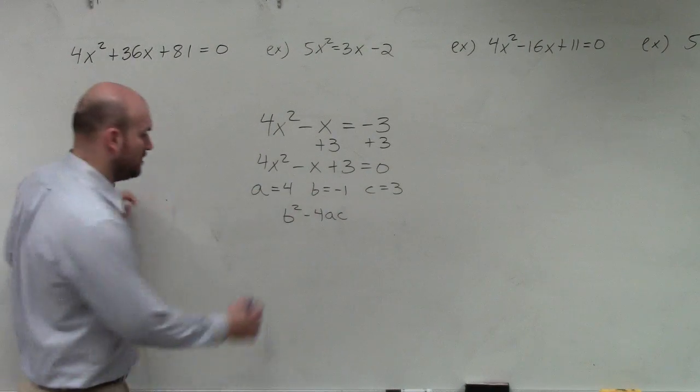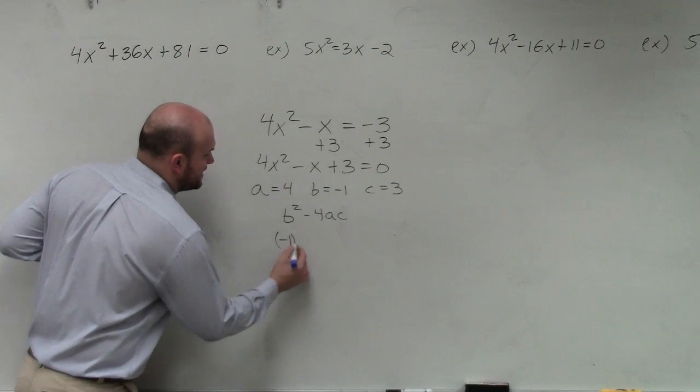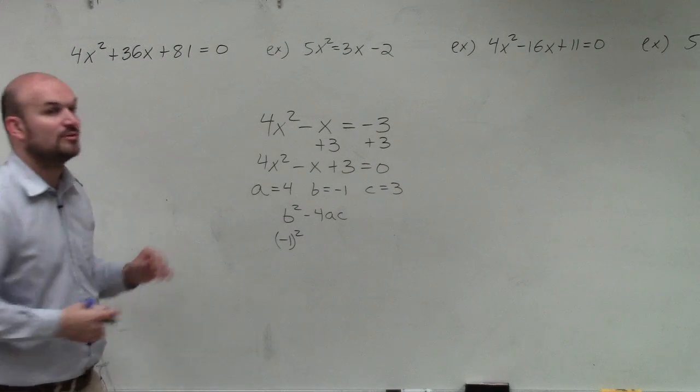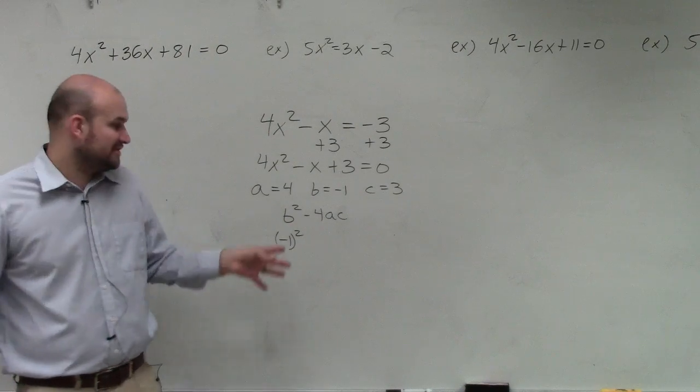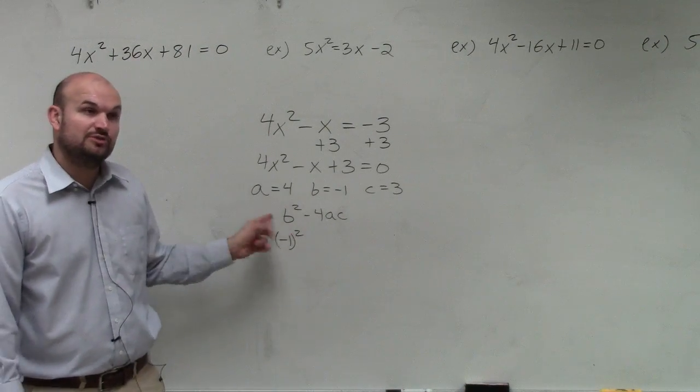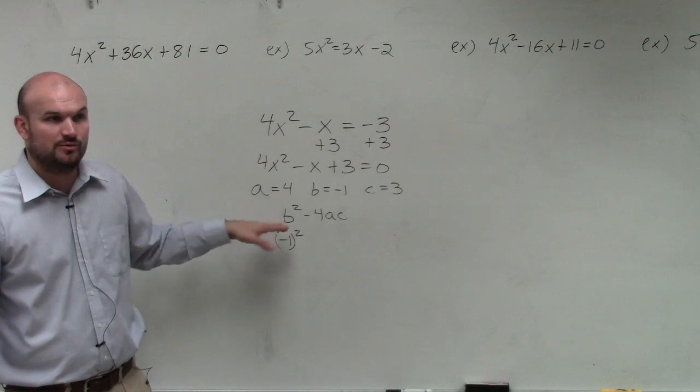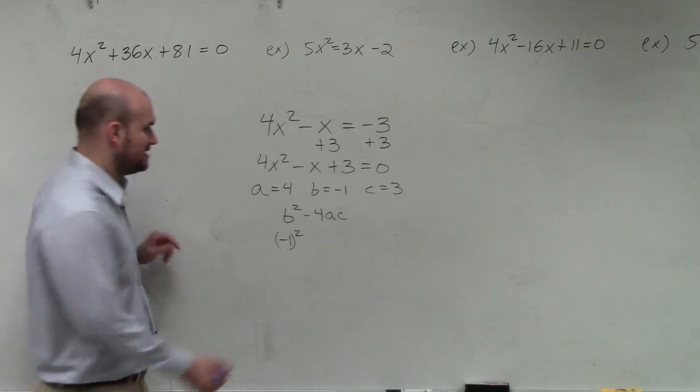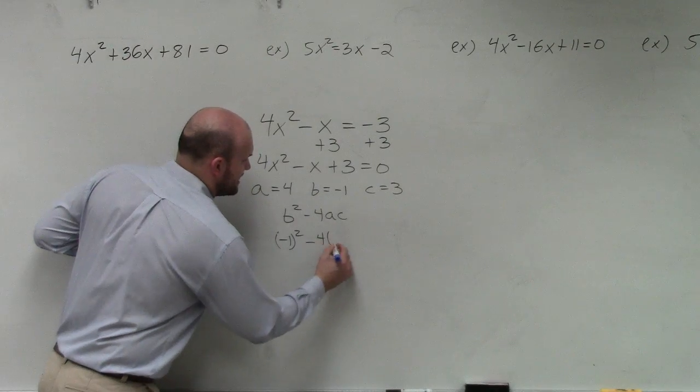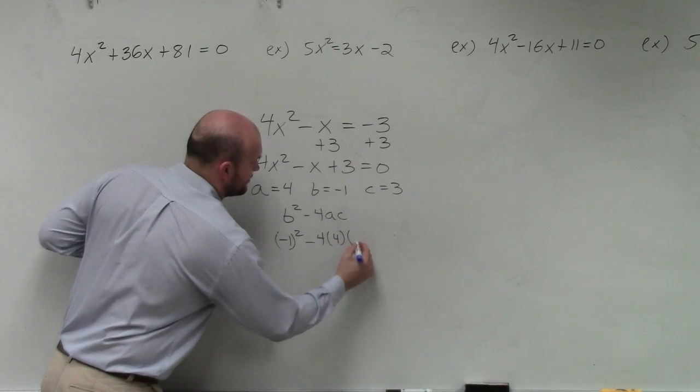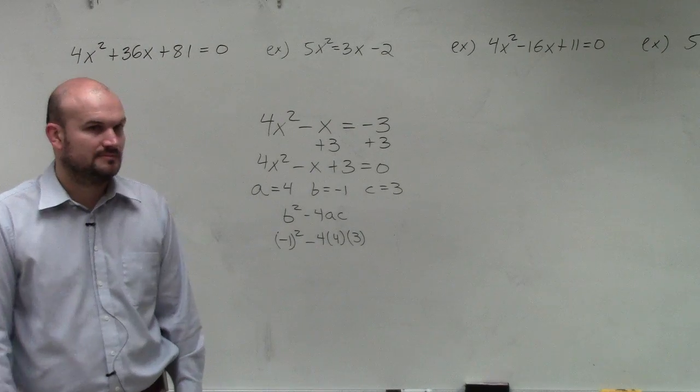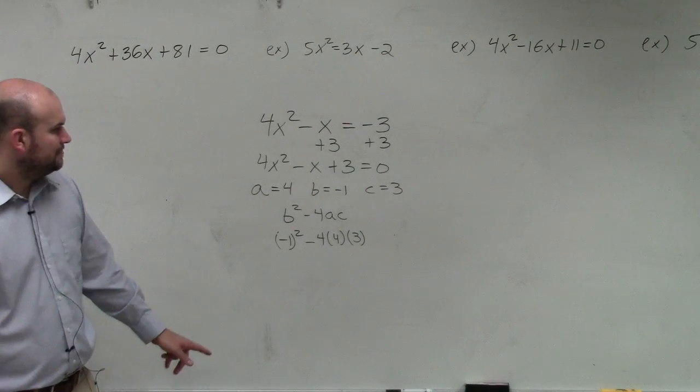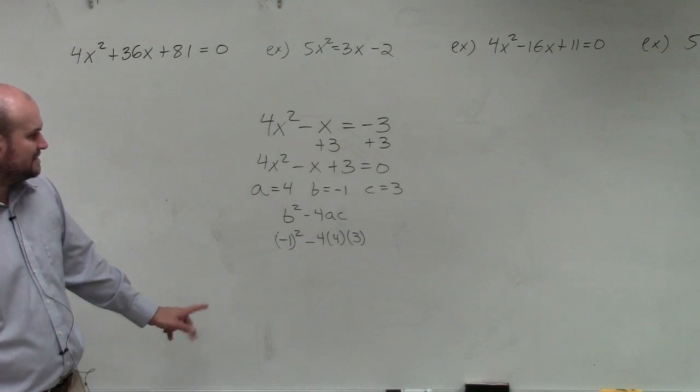So B was -1. Make sure you put that B in parentheses. You're squaring -1, because when you plug that in, if you're going to plug it in your calculator, you want to make sure you plug it in just like this. Not -1 squared, because your calculator will give you -1, which is incorrect. Minus 4 times 4 times 3. So I always like to use parentheses when doing this.